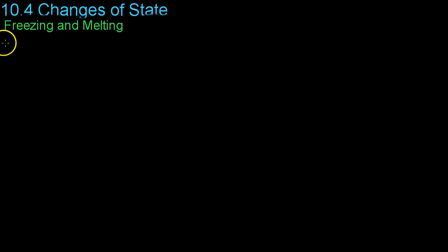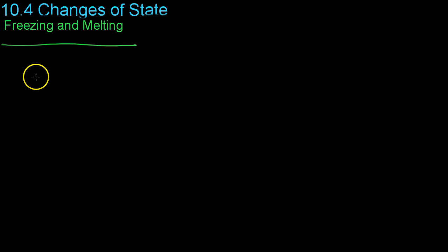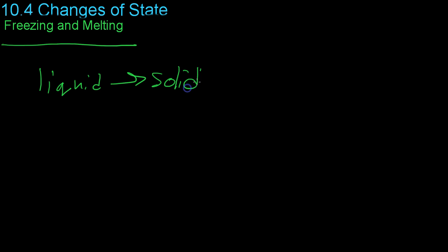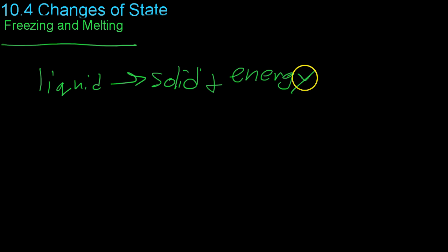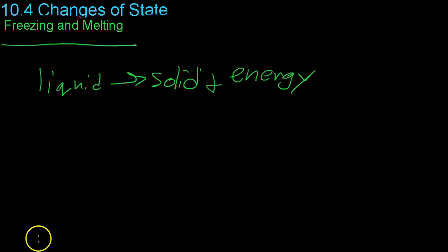Moving on from boiling, we're now going to be discussing freezing and melting, which are the two other typical phase changes. Freezing is the change of a liquid to a solid, and in this process, it also releases some energy as heat. If you'll remember from the law of conservation of energy, we can't just get rid of energy, so we have to add it onto the side of the reaction with the solid.